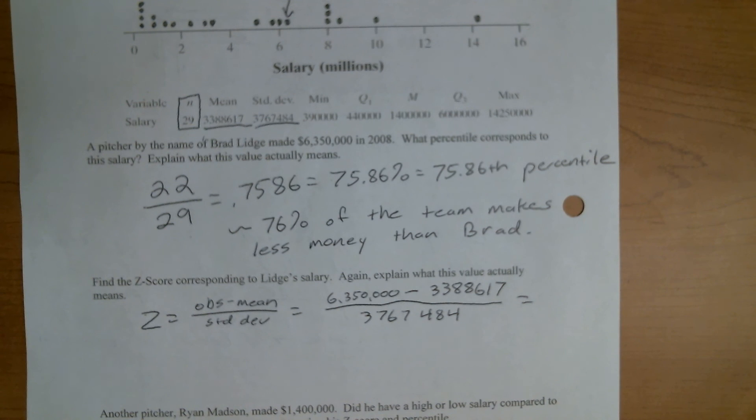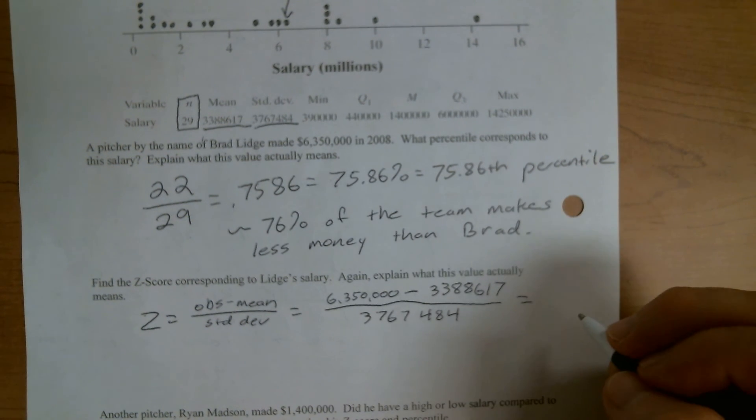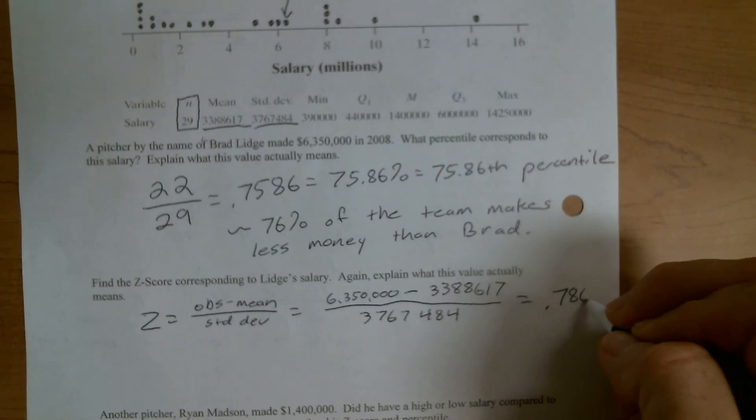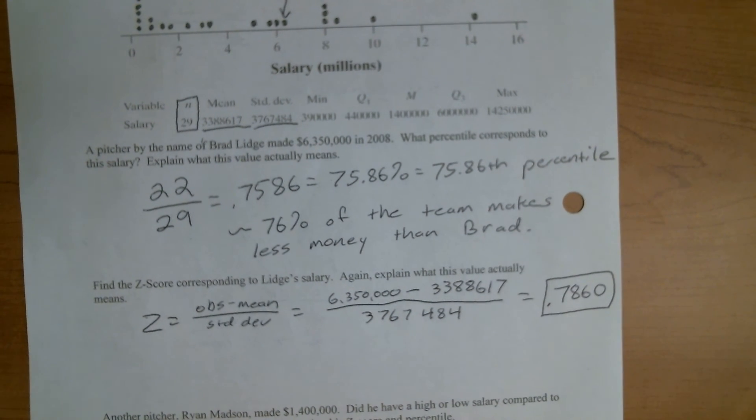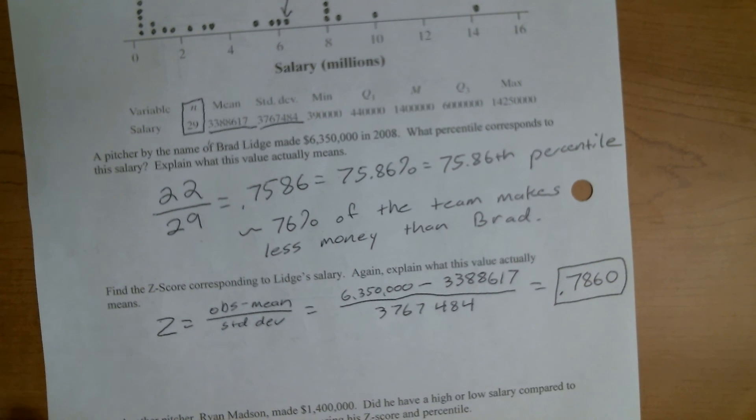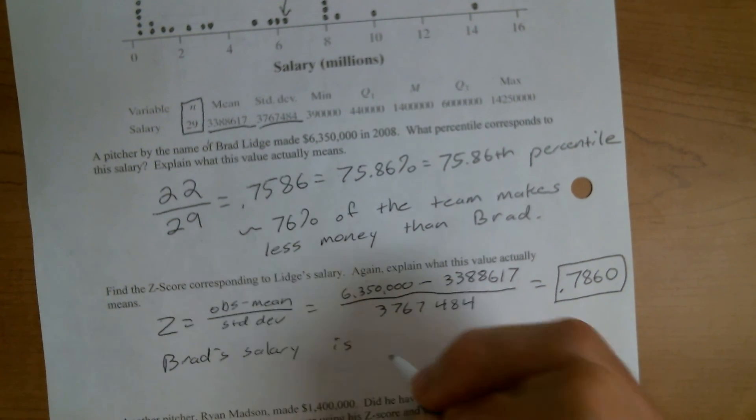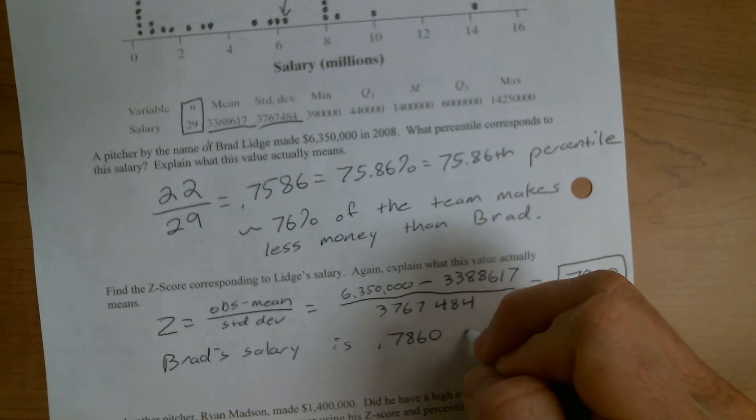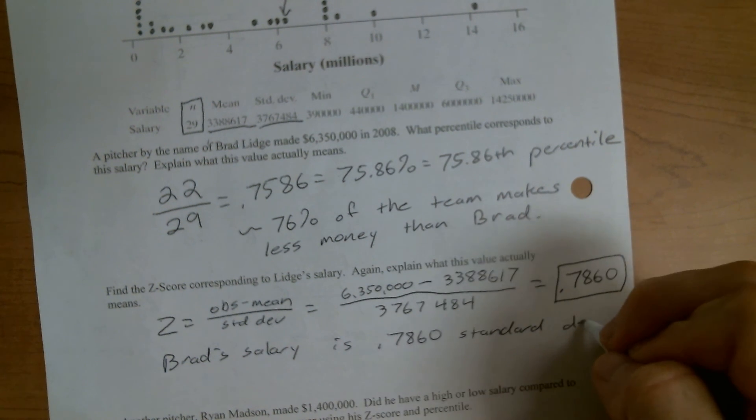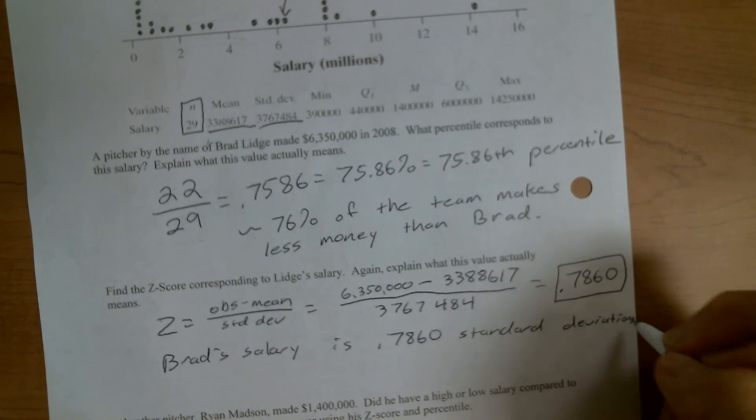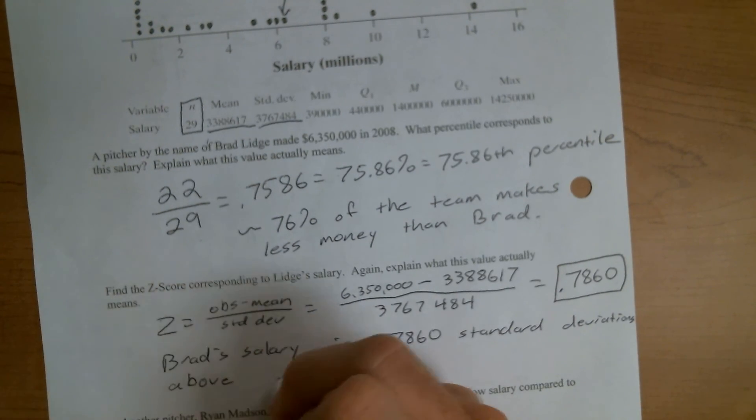6,350,000 minus 3,388,617 divided by 3,767,484. We end up with 0.7860. So what does this value mean? It means that Brad's salary is 0.7860 standard deviations above the mean.